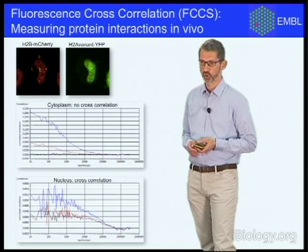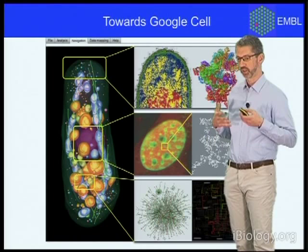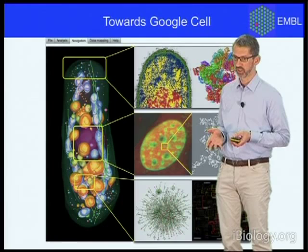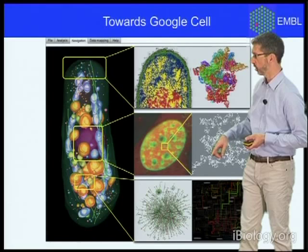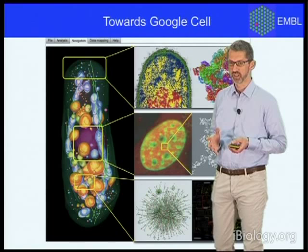We hope in the long run that high-throughput microscopy will really allow us to measure many such proteomic parameters — not only score the phenotypes and the genetic requirements, but also characterize in detail biophysically and biochemically the proteins that carry out these functions. By integrating all that data in the computer, the vision is that we are going to be able to construct a Google Cell — which is not like Google Earth a static map of the components of the cell, but rather a dynamic map of how these protein components work together to carry out the essential functions of life.